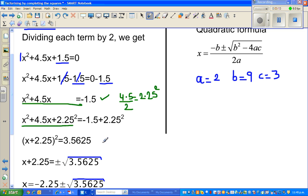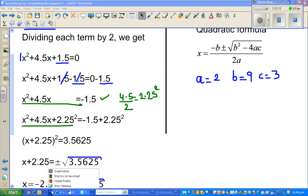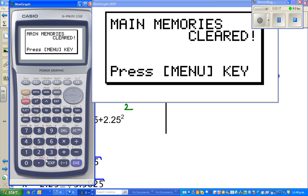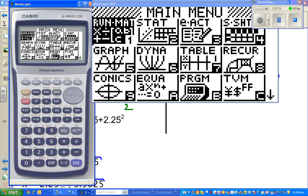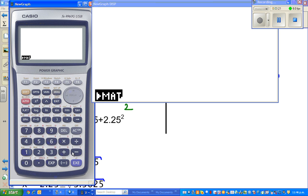Let me check on the calculator: -1.5 + 2.25² = 3.5625. So this is 3.5625, correct.